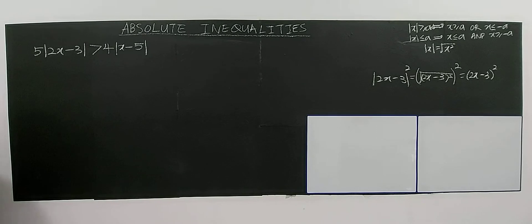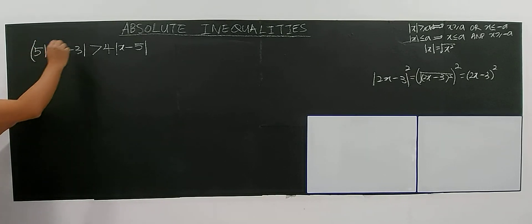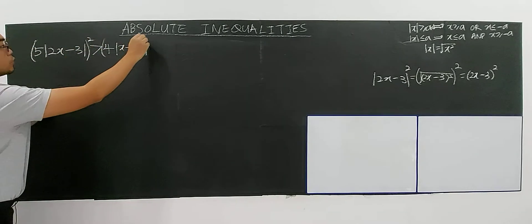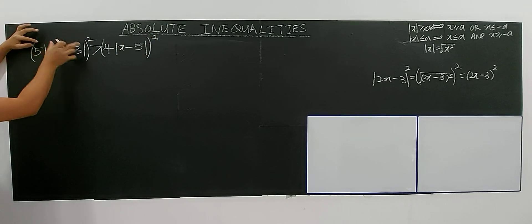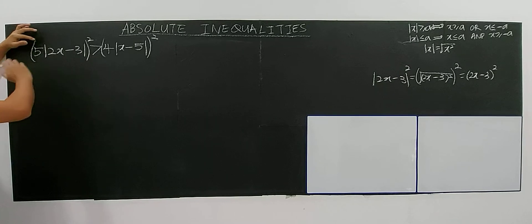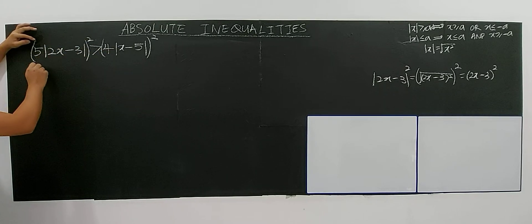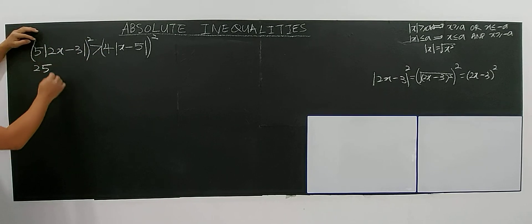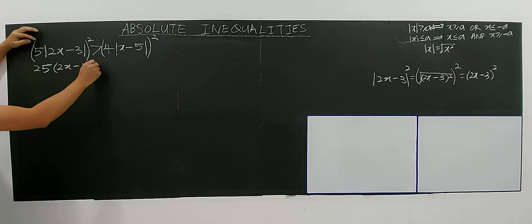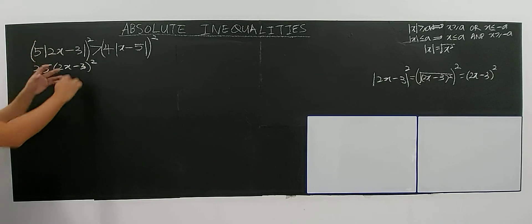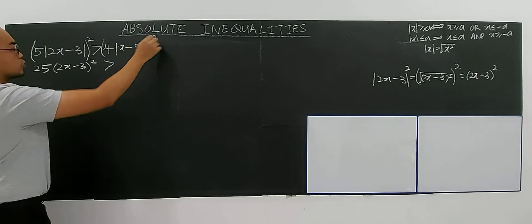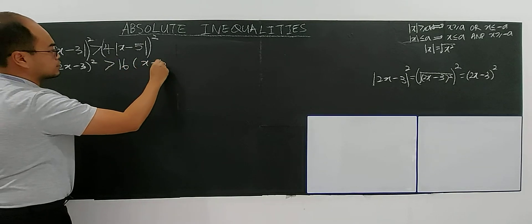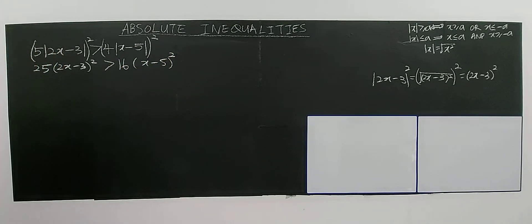Now I'm going to square both sides. If you do 5 to the power of 2, don't forget the coefficient of the modulus, you have to square everything. So 5 squared you have 25. Then this modulus squared will become (2x minus 3) squared because of that concept. Greater than 4 also has to be squared: 16. And (x minus 5) also squared. This is how you solve absolute inequality that involves modulus both sides.